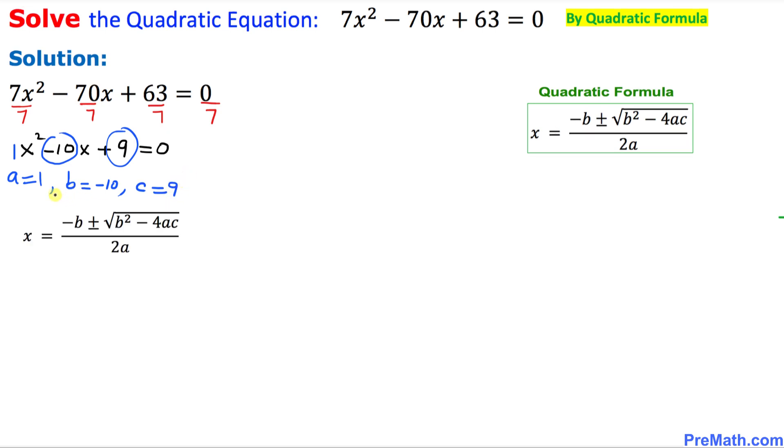Now we are going to fill in the blanks in this quadratic formula. Let's substitute the values. So x equals minus, and in our case b is negative 10, plus or minus square root of negative 10 squared minus 4 times a is 1 and c is 9. Everything is divided by 2 times a is 1.